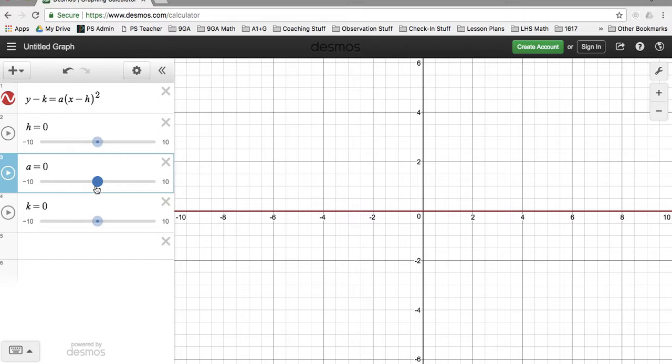And then when a is 0, the line is flat. And then when it goes to negative, it goes backwards, or it flips across the x-axis. And it gets narrower and narrower as it decreases.